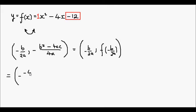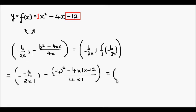Negative of negative 4 divided by 2 times 1. And for the y-coordinate, we have negative of negative 4 squared minus 4 times 1 times negative 12 divided by 4 times 1. Well, that's going to equal negative of negative 4 is positive 4 divided by 2 is equal to 2.